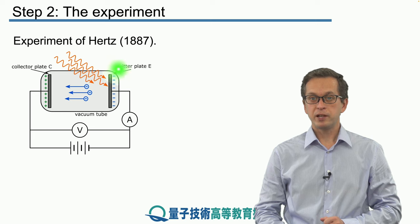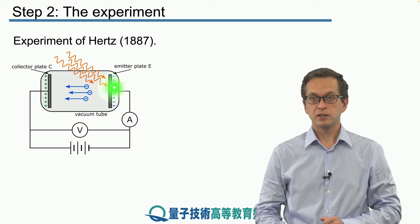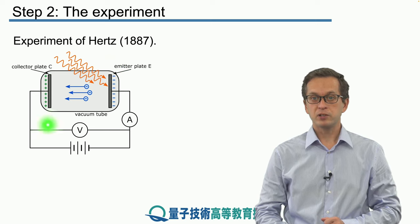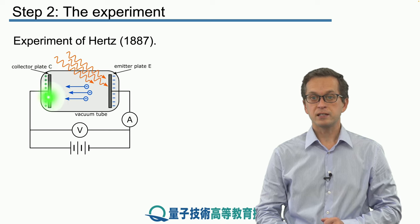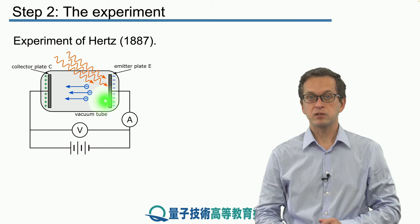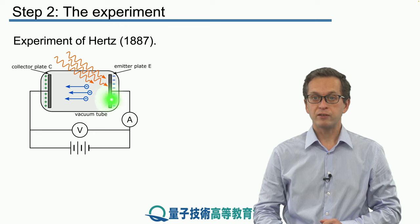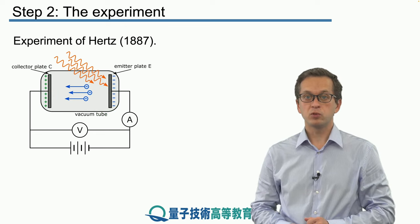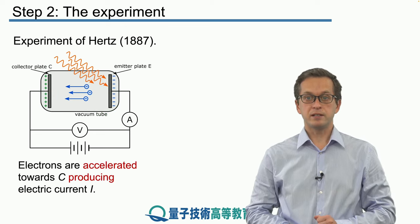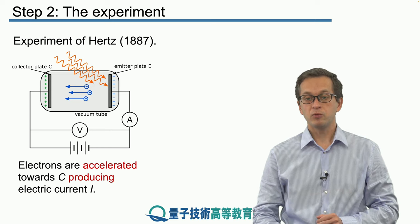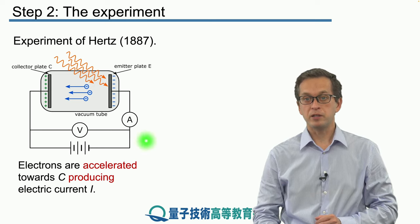This emitter plate E was negatively charged and this positively charged collector plate C was designed in such a way that the ejected electrons, the photoelectrons travelling from E would be accelerated towards the collector plate C, producing current which was then measured by the ammeter A over here.